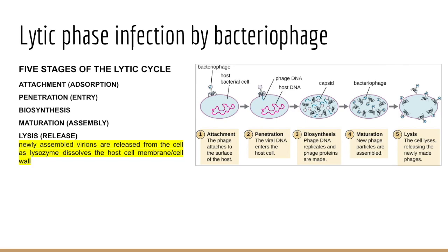Once new virions have been assembled, they're released from the host cell by lysis — the process we call lysis. Lysozyme completes its work on the cell wall, weakening it so newly made bacteriophage are released into the environment. The T4 bacteriophage takes about 25 minutes to go through these five steps, producing as many as 100 to 200 new virions for each bacterial cell lysed. The period from attachment to release is called the burst time, and the number of new virions released from each lysed cell is called the burst size.